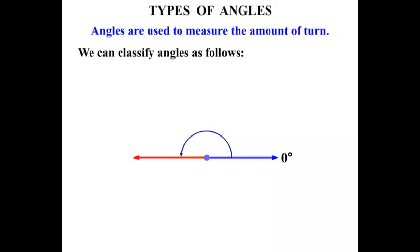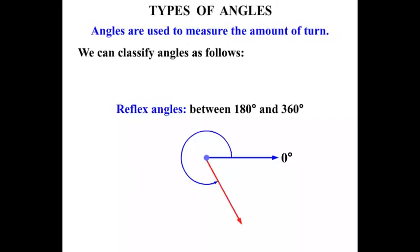Now we can go further. We keep going around. We're now into reflex angles, and they are between 180 degrees and 360 degrees. We're almost a full circle.